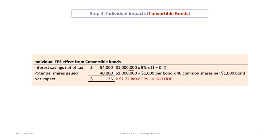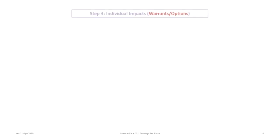For the convertible bonds: there is $1,000,000 in bonds bearing 9% interest, meaning interest expense is $90,000. We multiply by the after-tax rate — with a 40% tax rate, we multiply by 0.60 — giving $54,000 in after-tax interest savings if the bonds were converted. For the share impact: $1,000,000 divided by $1,000 per bond gives 1,000 bonds, each convertible into 40 common shares, resulting in 40,000 additional shares. The individual impact is $54,000 divided by 40,000, which equals $1.35. Since $1.35 is less than $1.72 basic EPS, we include the convertible bonds.